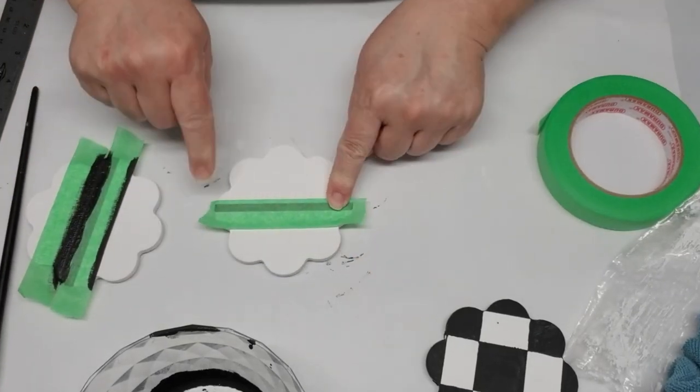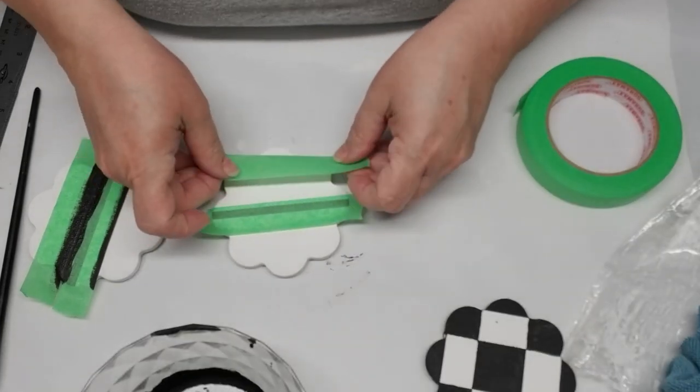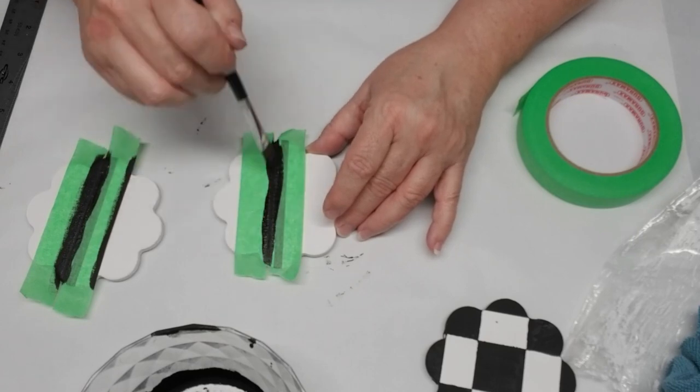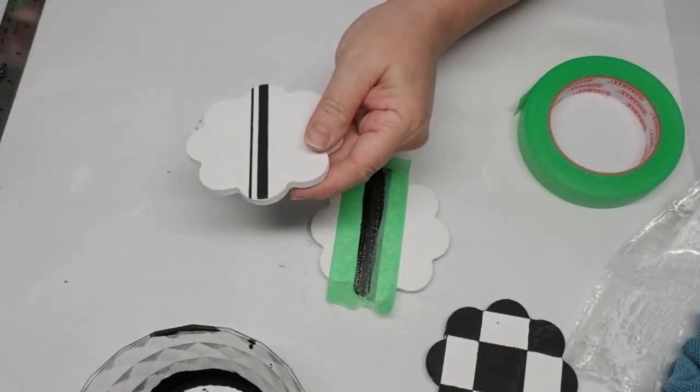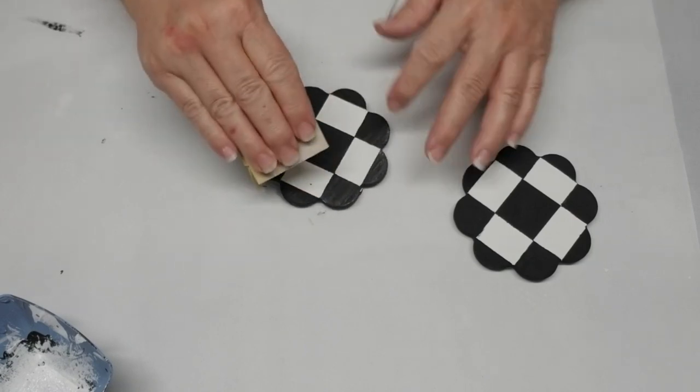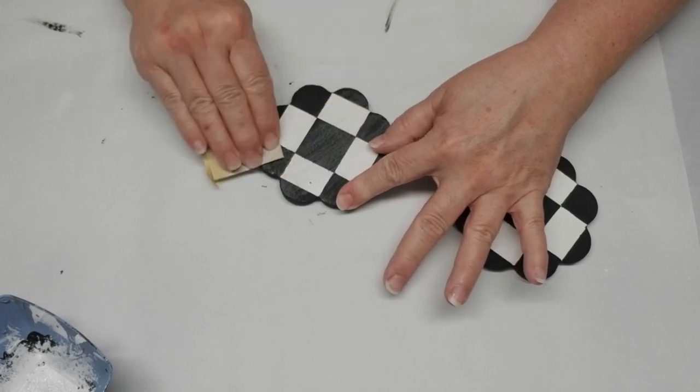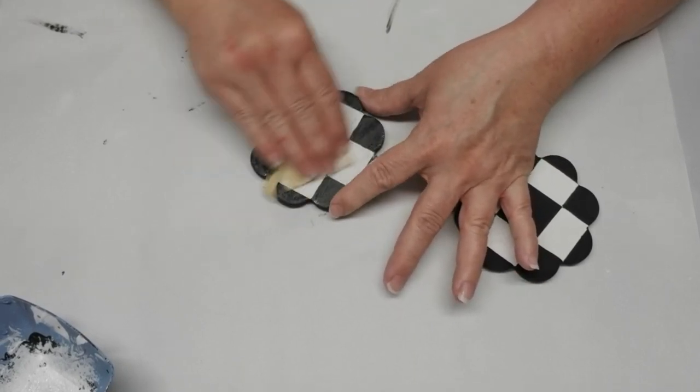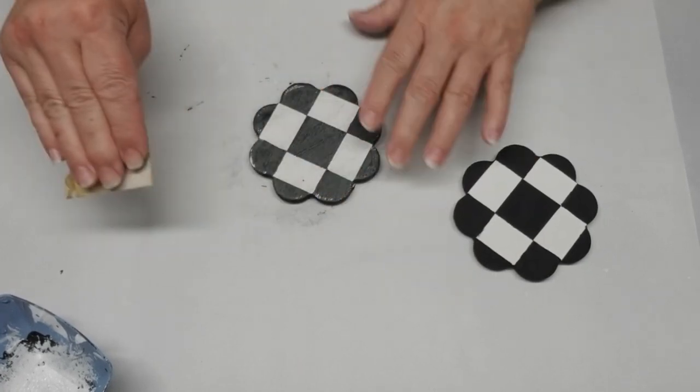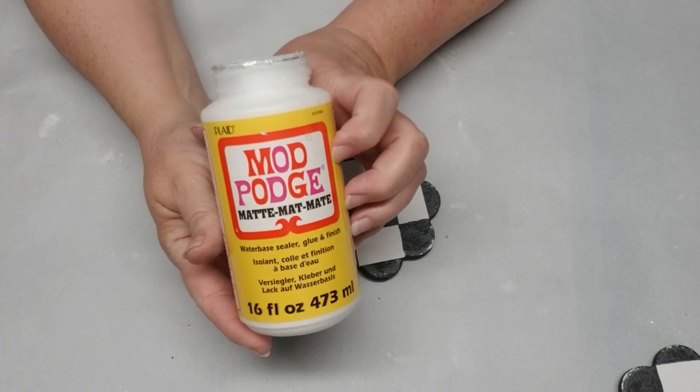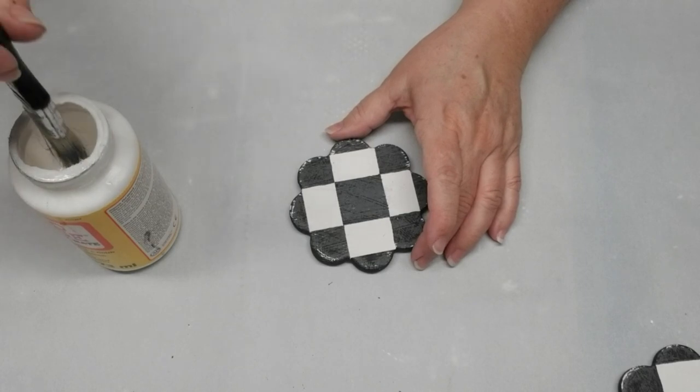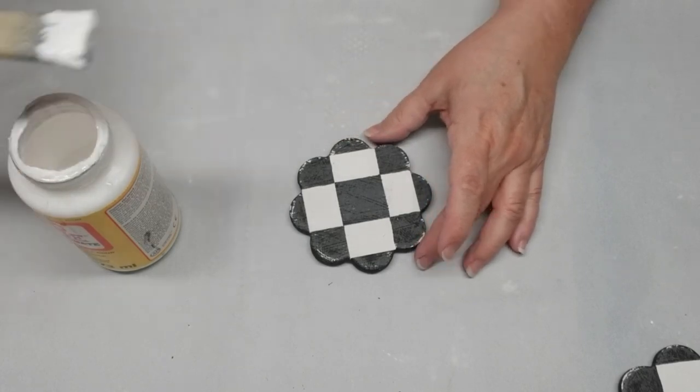I wanted these coasters to have more of a rustic feel to them, so I'm taking some fine grit sandpaper, going across all of it, but then pulling a little bit of the black off the edges just to give it more of a distressed look. The final step to make them more water resistant is to use some matte Mod Podge. I'm going to give them two to three coats and make sure it dries really well in between.